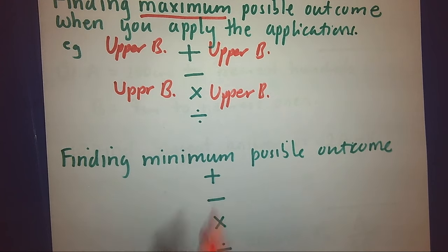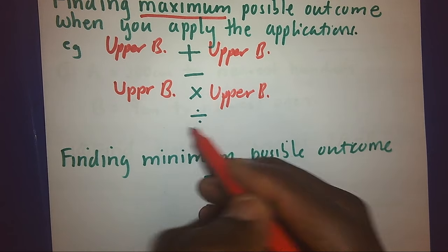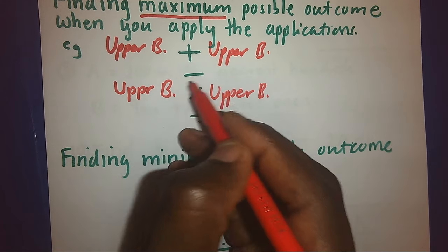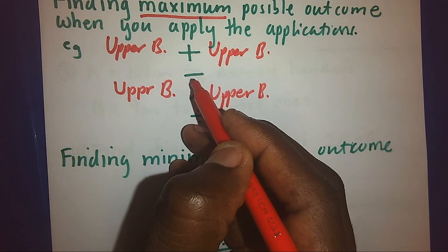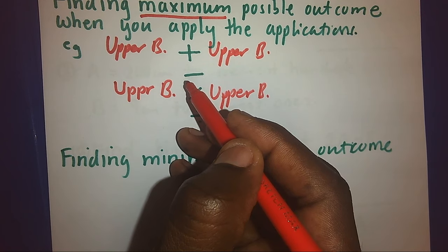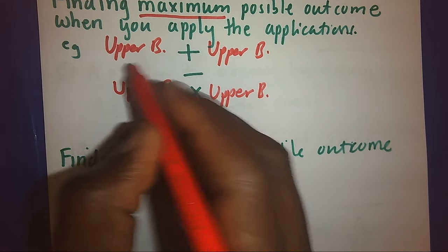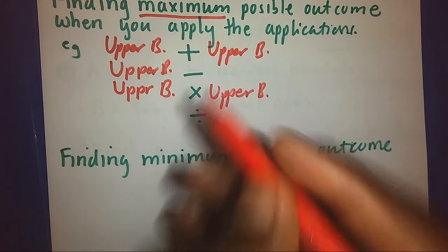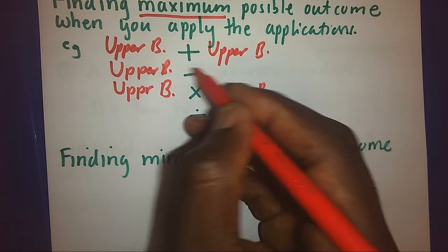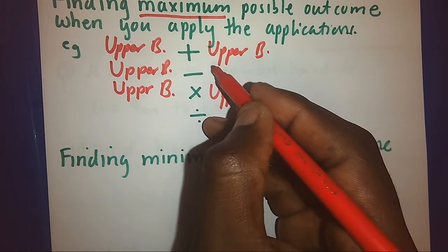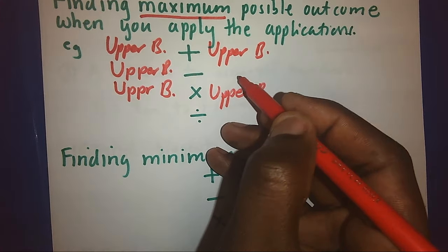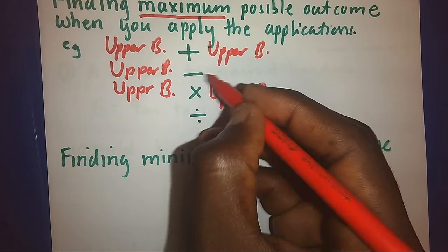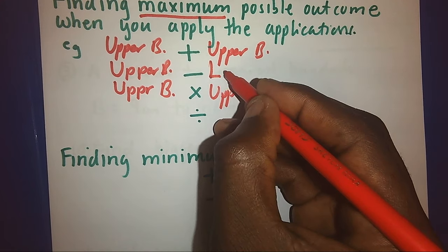But for subtraction and division, it's a little bit different. When we look at the common sense of subtraction, it involves reducing the quantity. So, I must have the biggest or the upper bound, but because I must subtract, I cannot subtract the upper bound — my answer will not be the biggest. In order to get the biggest answer after subtracting, I must subtract the lower bound.